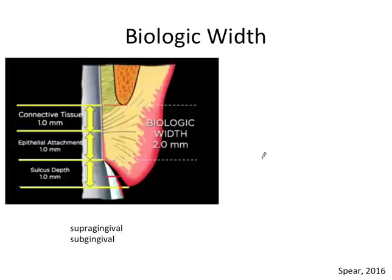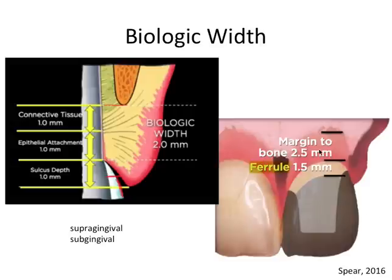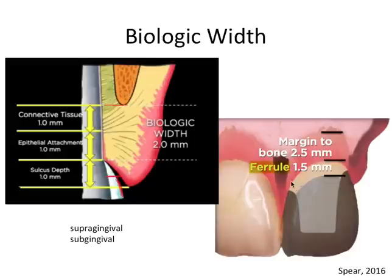So that's another important number: 2.5 millimeters. We need at least 2.5 millimeters from bone to crown margin for biologic width, and if we add our ferrule of 1.5 millimeters, we get a grand total of 4 millimeters from the height of the ferrule to the height of the bone.